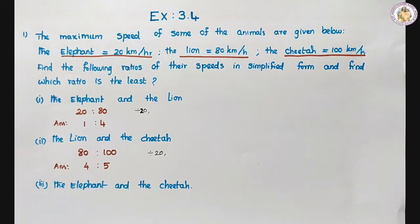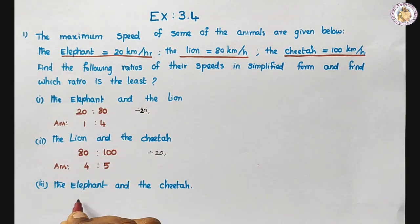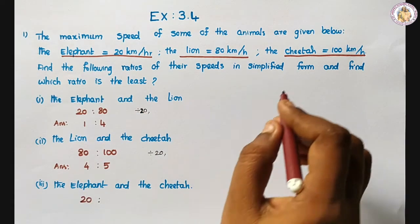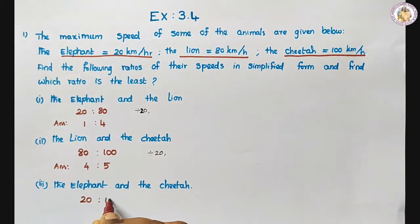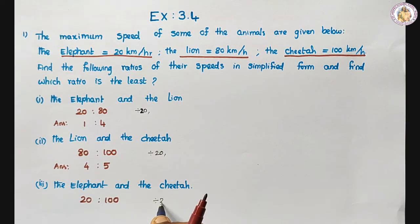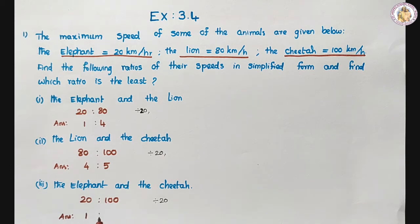Third one: the elephant and the cheetah. What is the speed of elephant? That is 20. Cheetah's speed is 100. Both are divided by 20. One 20 is 20, five 20s are 100. So 1 is to 5.